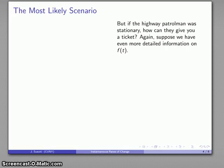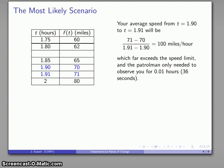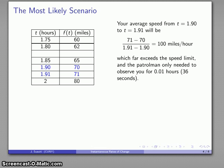More commonly, patrolmen are stationary. So how can they determine how fast you're going? Let's go back to the idea of more detailed information on f of t. Between t equals 1.9 and t equals 1.91, suppose I've gone one mile in 0.01 hours. That gives an average speed of 100 miles per hour, which far exceeds the speed limit — and the patrolman only needs to observe you for 0.01 hours, which works out to about 30 seconds.